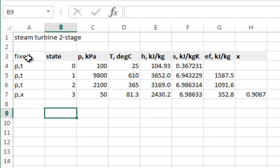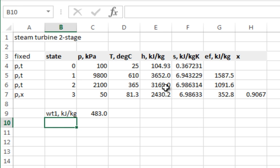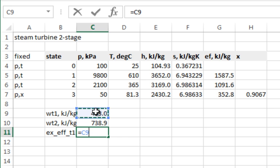Maybe I could do the calculations. So what did we want to know? Work of the first turbine stage in units of kilojoules per kilogram. It was the difference between the enthalpy at state 1 and the enthalpy at state 2. There you go. And then the work of the second turbine stage in kilojoules per kilogram. The enthalpy at state 2 minus the enthalpy at state 3. And then the exergetic efficiency of the first turbine stage.